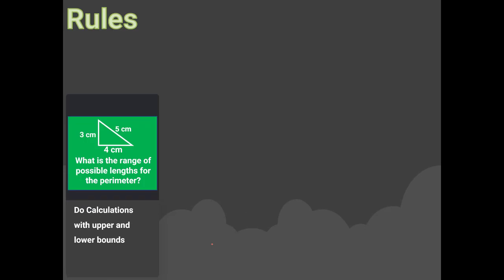Now we're going to calculate with upper and lower bounds. First, let's look at some rules. We'll draw a quick table to work out upper bound and lower bound calculations. The table covers the operations: adding, subtracting, multiplying, and dividing.